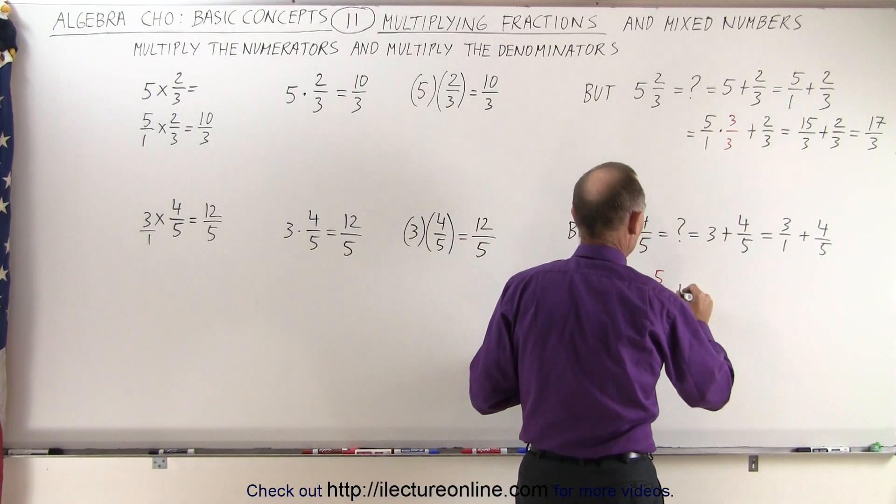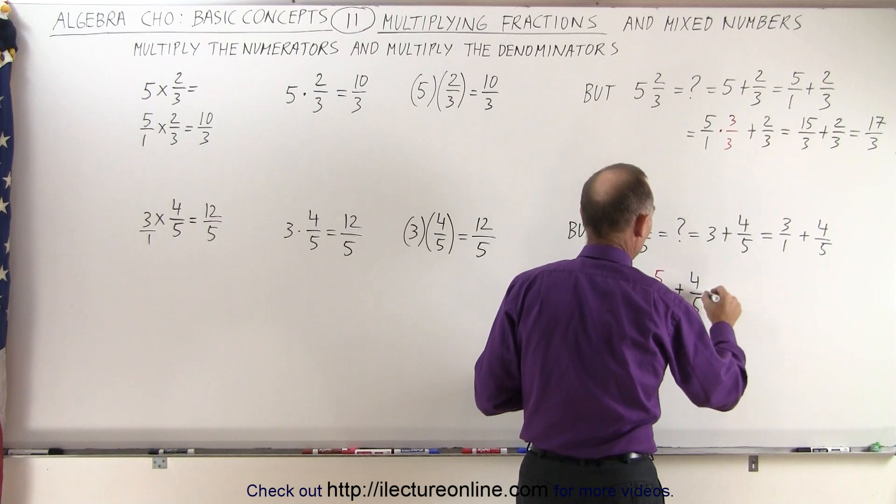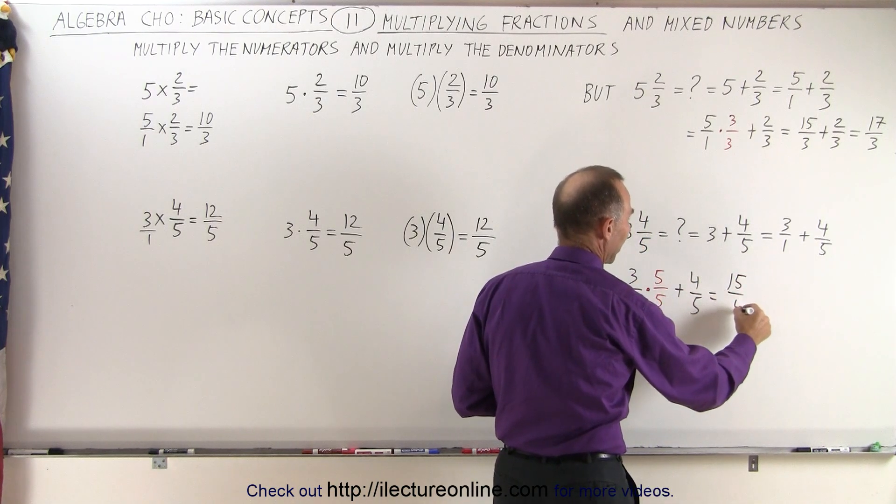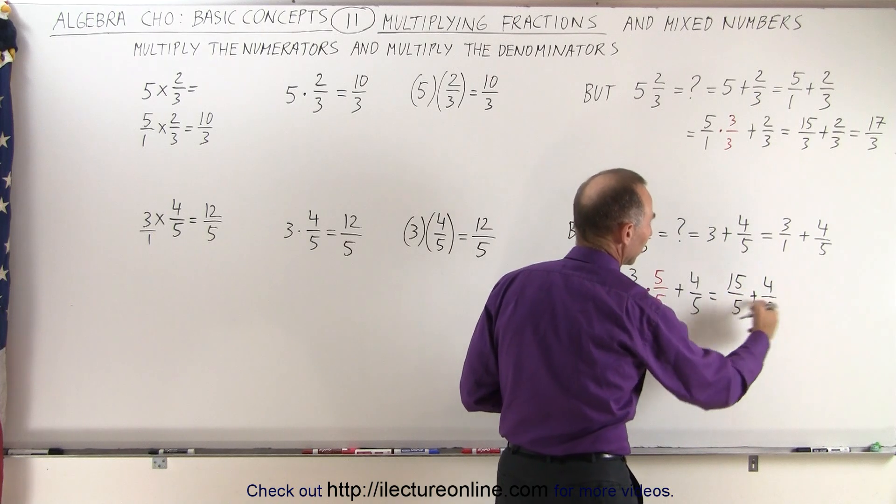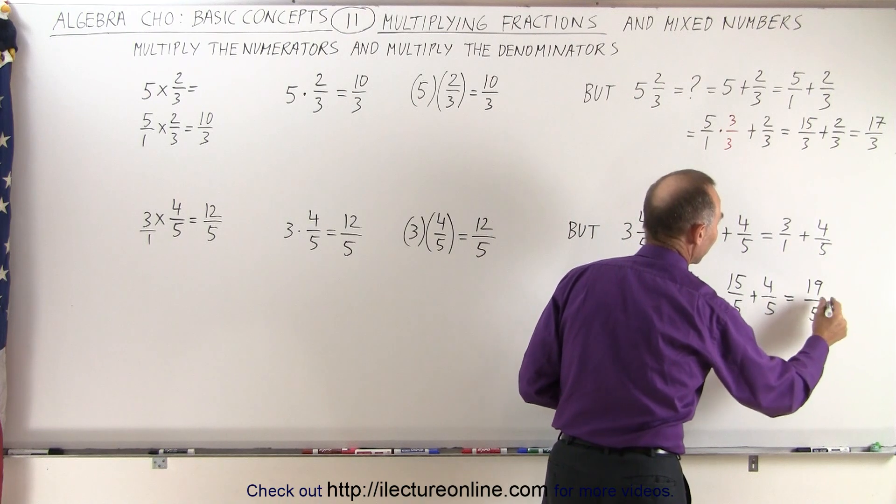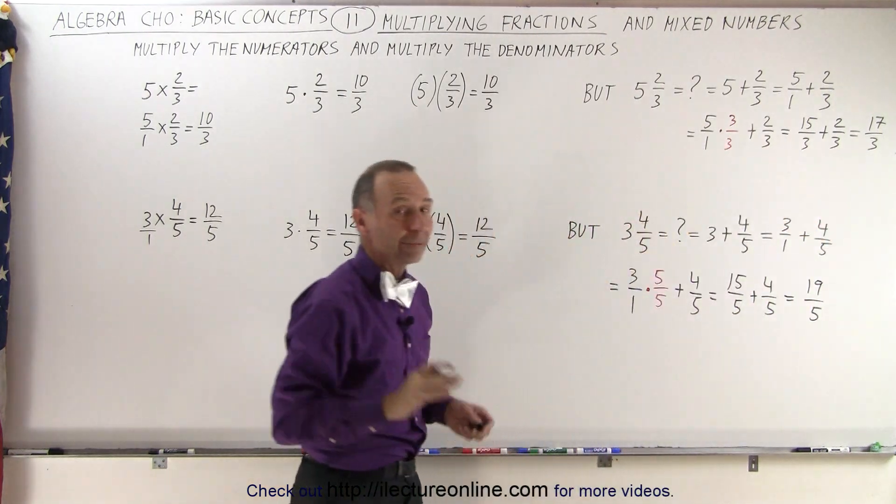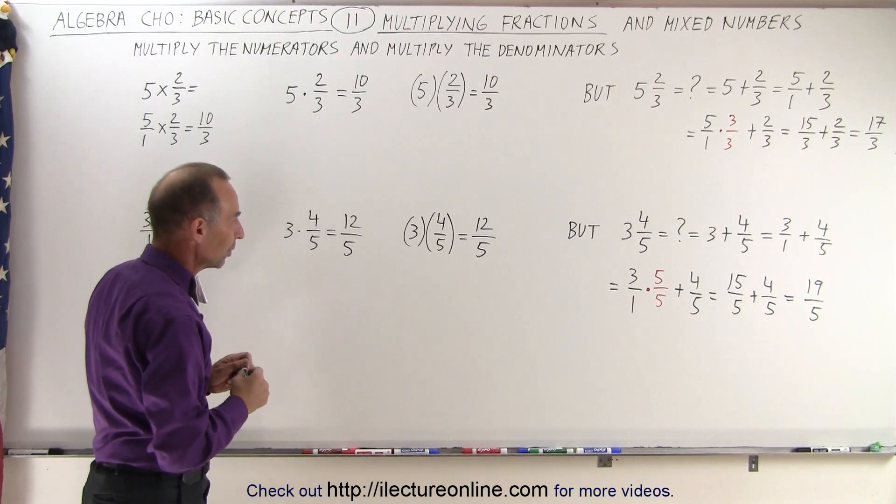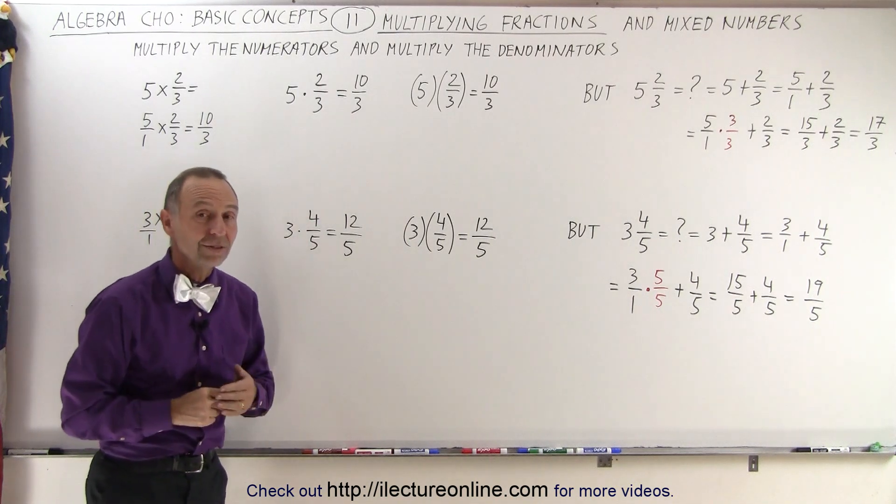Which means that this is going to become 15 over 5 plus 4 over 5, and now that the denominators are the same, this then becomes 19 over 5. I just want to point out that mixed numbers are not the same as multiplying a number with a fraction, and now you can see the difference.